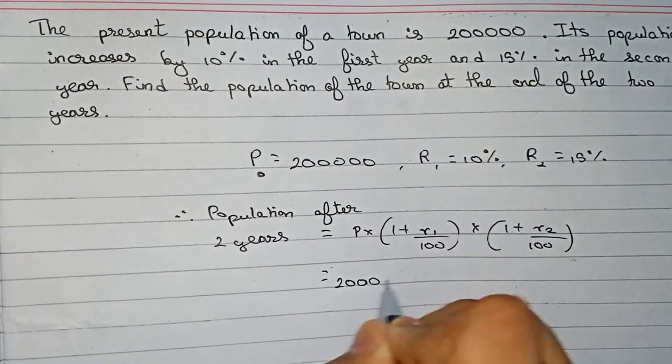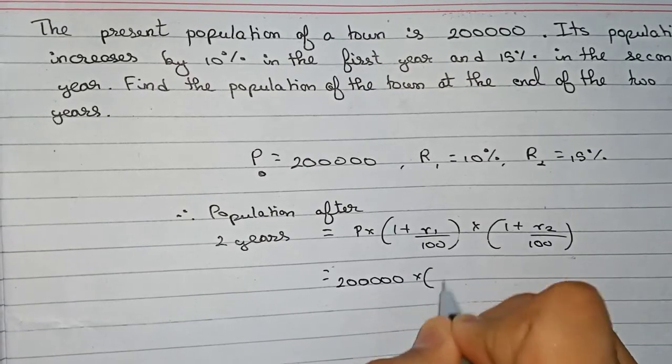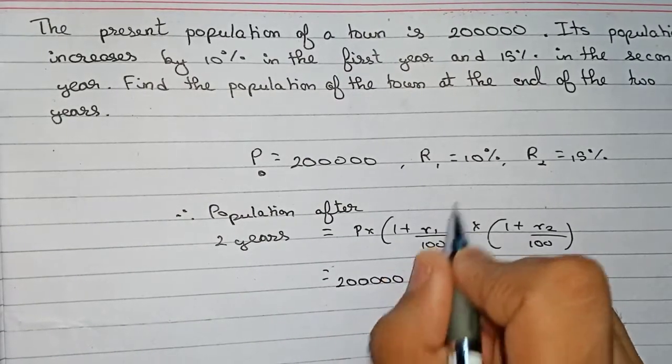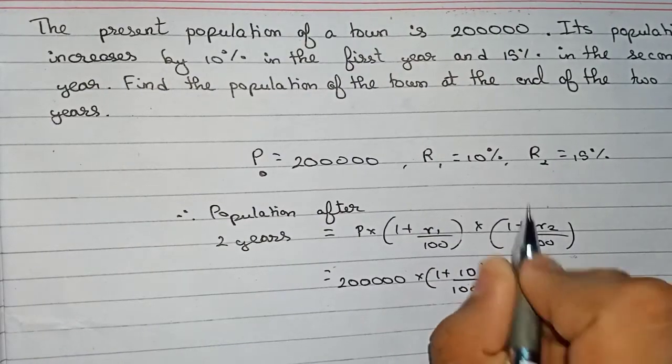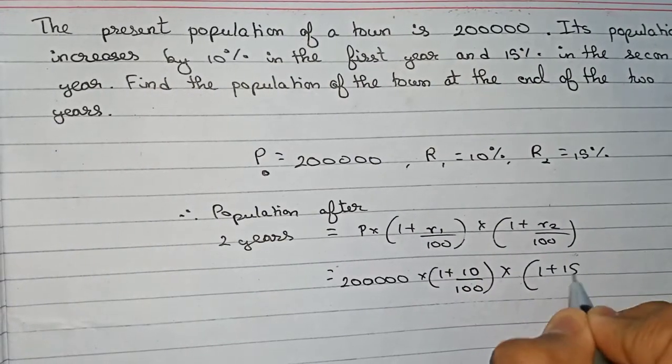So the principle is 2,00,000 into 1 plus R1, it is 10 percent, 10 by 100, into R2 that is 15, that is 1 plus 15 by 100.